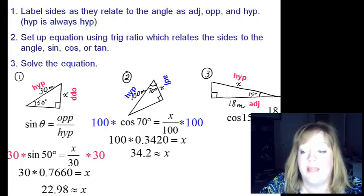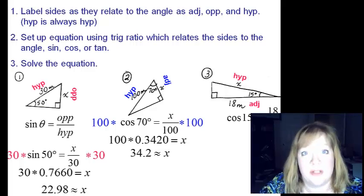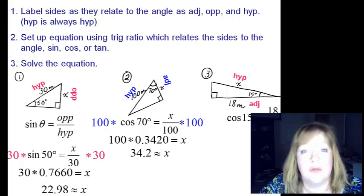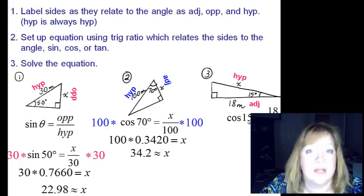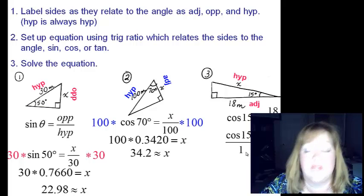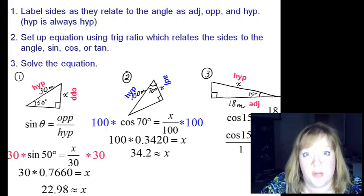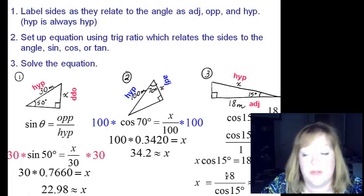So we're going to use cosine again. But this time, the x is on the bottom. So a couple of ways that you can solve this one, I'll just show you the proportion method. Remember cosine of fifteen degrees could be written as cosine of fifteen over one equals eighteen over x. In a proportion, cross products are always equal. So we would have x times the cosine of fifteen equals eighteen times one. And then to get x by itself, just divide by the cosine of fifteen. So that's where I get eighteen divided by the cosine of fifteen. That's going to give us approximately eighteen point six three.